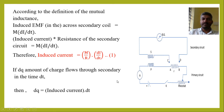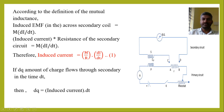Initially, what we need to do is connect the terminals C and D. By closing the key K, the ballistic galvanometer shows a deflection. This deflection is due to the mutual inductance.